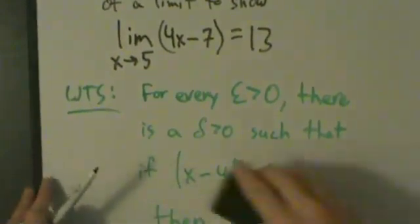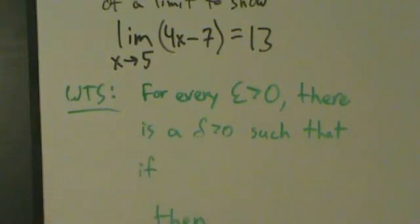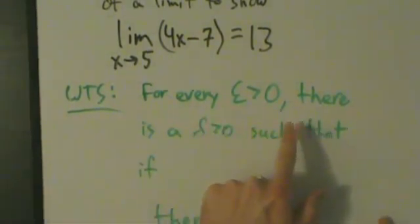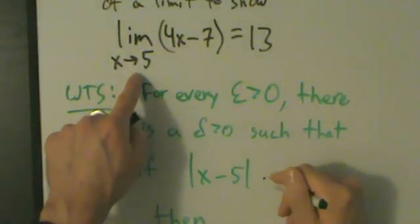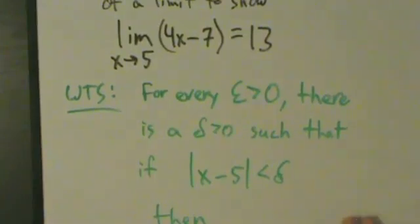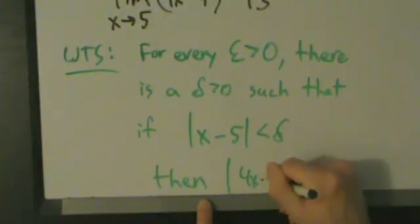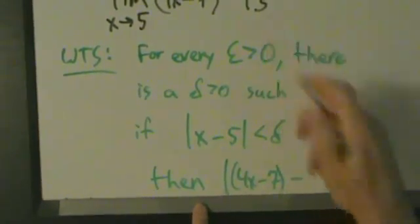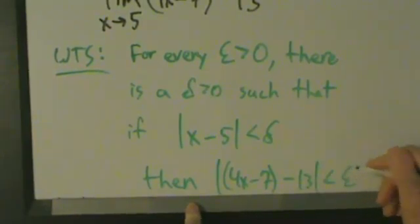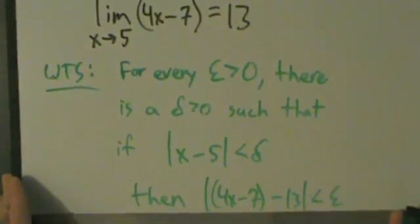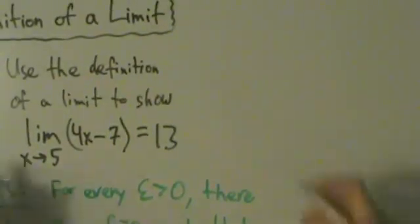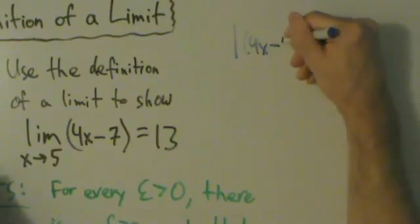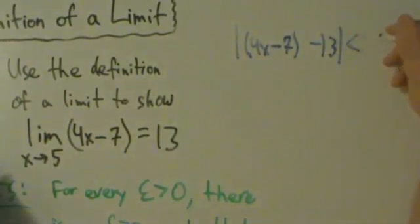What we want to show is that for every epsilon greater than 0, there is a delta greater than 0, such that if the absolute value of x minus 5 is less than delta, then the absolute value of 4x minus 7 minus 13 is less than epsilon. So this is what we want to show. We're going to approach this the same way we approached Example 1.